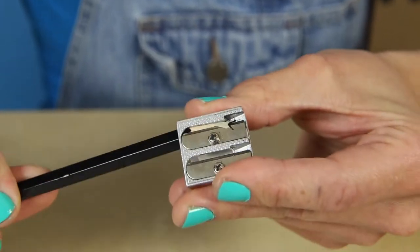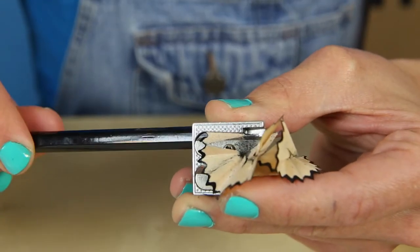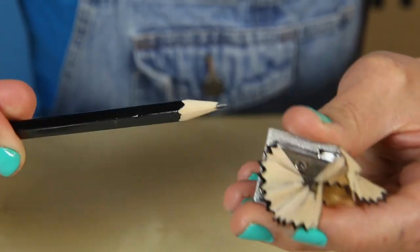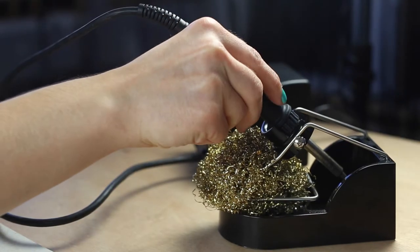Imagine your tip is like a pencil. Every time you write with it, it becomes blunt and you have to sharpen it. That's what it's like when you solder. Your tip needs to continuously be kept sharp.